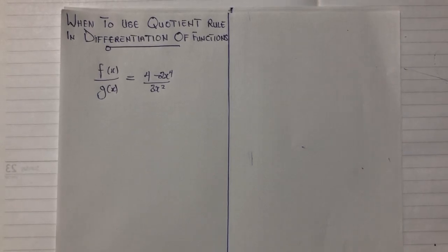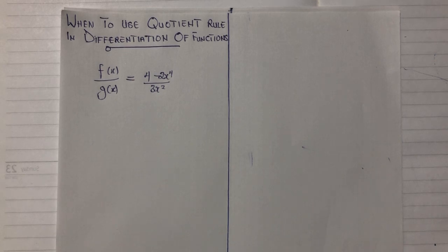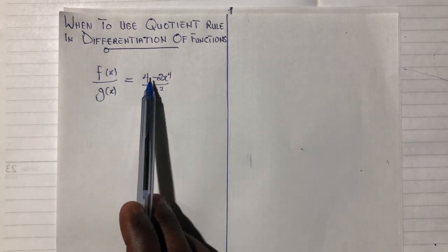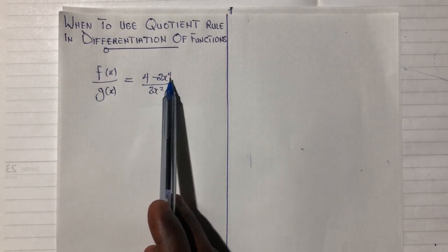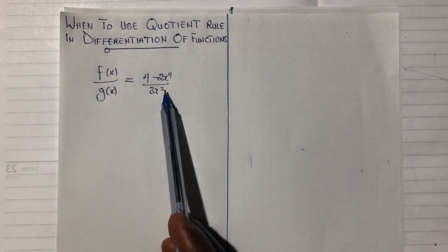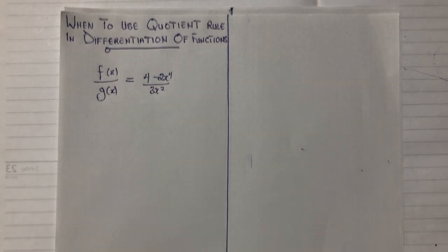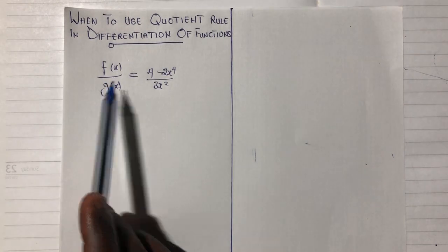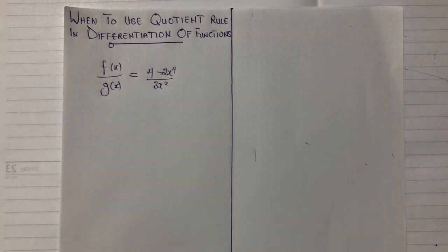Hello, welcome to this channel. This is Tita Think and in this video I'll be talking about the quotient rule — how to use the quotient rule to differentiate or find the derivative of functions. We apply the quotient rule anytime we see a function dividing another function where we are supposed to find the derivative of that function.